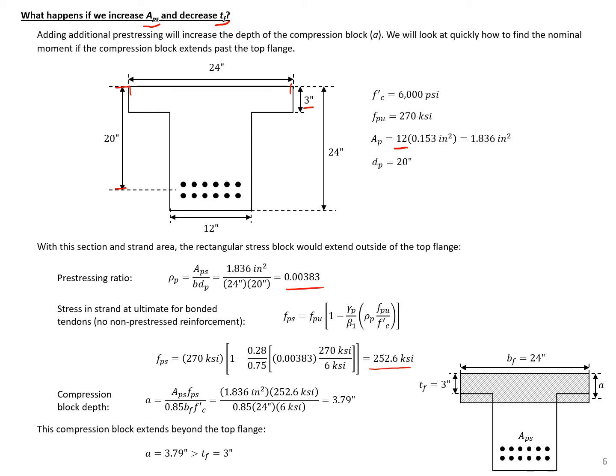We can then use our equilibrium expression to calculate our compression block depth. We'll see our compression block depth A equal to 3.79 inches. Comparing that to the thickness of our flange, which is three inches, we can see our A is greater than the flange thickness. So our compression block is extending out of the top flange and into the web. We need to analyze our section a little differently, which we'll do on the next couple of slides.